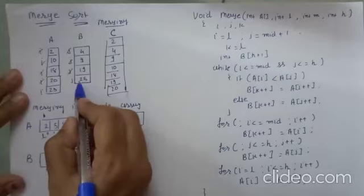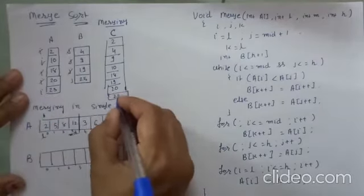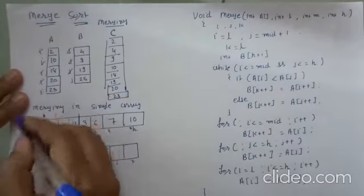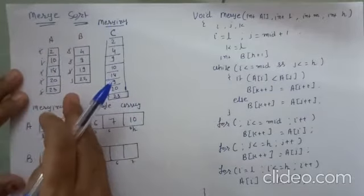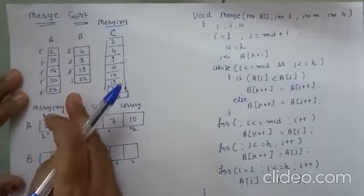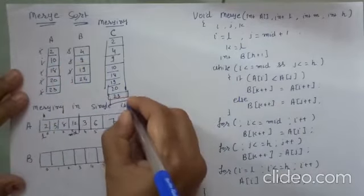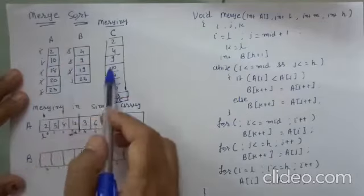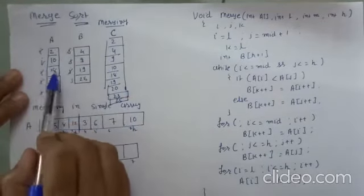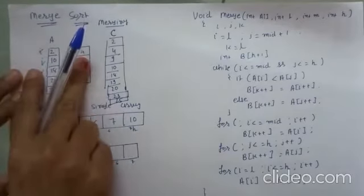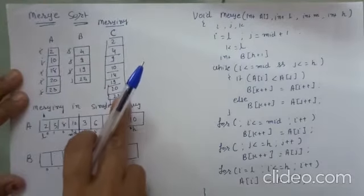Then compare I and J: 23 and 25 — 23 is smaller, so 23 is copied into the array. Now only 25 is remaining, so we copy all remaining elements of any array into C last. This is the merging procedure. Here I have performed this merging procedure on two different arrays and stored the result into a third array.